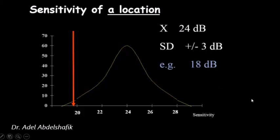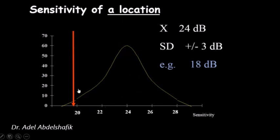This is what happens with the visual field: each location of the tested field has a known mean and standard deviation. So if we have a patient and for that location the value was 18, and the mean is 24, then 18 is two standard deviations below the group, so we can say this point is in the lower 2.5% of the population.